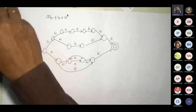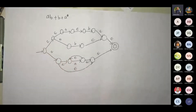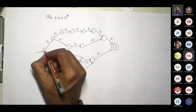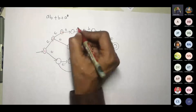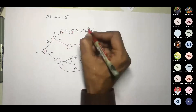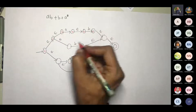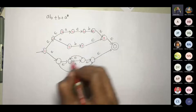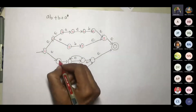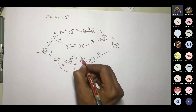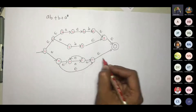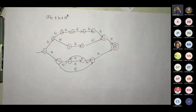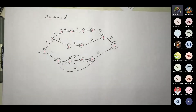Now let us number this: 0, 1, 2, 3, 4, 5, 6, 7, 8, 9, 10, 11, 12, 13. Correct? Fine.